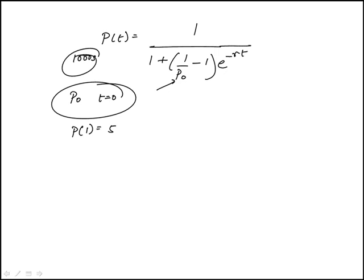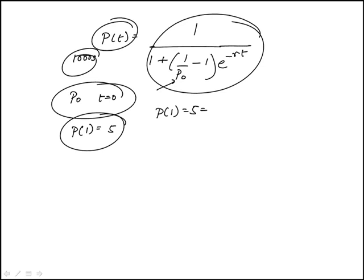The question is, which of the following is equivalent to r? So we have to use this information and rewrite this to isolate r. So if we put t equal to 1, this is P1, which we know is 5, and we substitute t equal to 1 into this expression, so 1 plus 1 over P sub 0 minus 1 times e to the minus r, because t is 1.